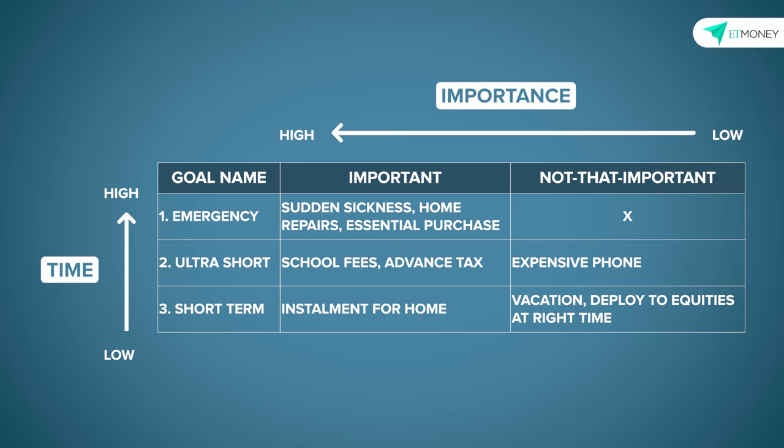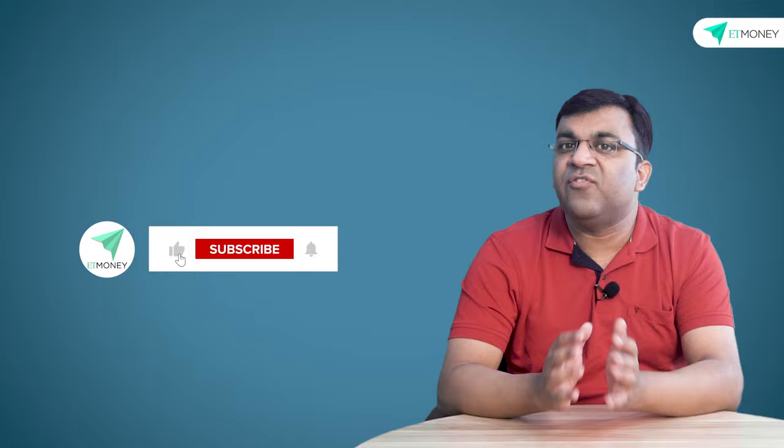The money you have allocated for goals like your emergency funds, school fees, etc. should be invested or kept in only those instruments which have very little risk. As we go along in this video, we shall detail out the different types of instruments that one can use for different scenarios. But as an investor, always make certain that you classify each of your short term goals in the simple time versus importance table so that you don't find yourself running around, especially when you have some important financial events coming up.